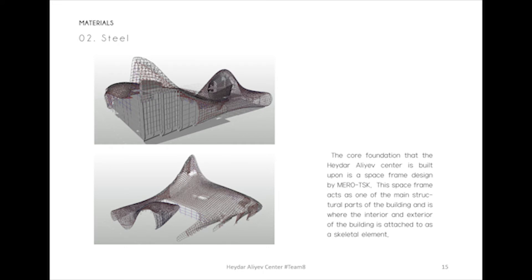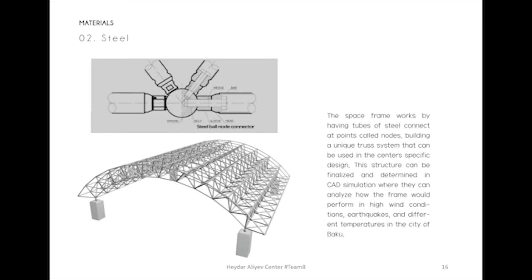The core foundation of the Haidar Alive Center is built upon a space frame designed by Mero-TSK. This space frame acts as one of the main structural parts of the building, and is where the interior and exterior of the building is attached to as a skeletal element. The space frame works by having tubes of steel connect at points called nodes, building a unique truss system. This structure can be finalized and determined in CAD simulation, where they can analyze how the frame would perform in high wind conditions, earthquakes, and different temperatures in the city of Baku.